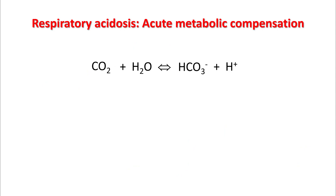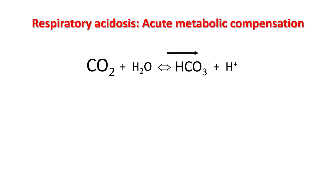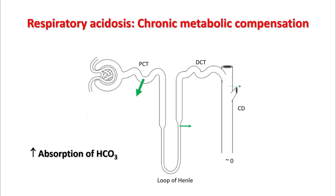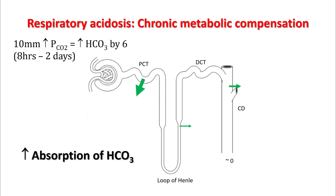Respiratory acidosis is compensated by acute metabolic compensation. When your carbon dioxide level rises, the reaction shifts towards the right, resulting in formation of bicarbonate ions. Your kidneys also help somewhat — there is increased chloride excretion and bicarbonate absorption — however, this is not significant. Therefore, a 10 mmHg rise in PCO2 only causes an increase in bicarb by one. Chronic metabolic compensation is completely done by the kidneys, which increases absorption of bicarb from your proximal convoluted tubule and collecting duct. In these cases, a 10 mmHg rise in CO2 results in increased bicarb by six.